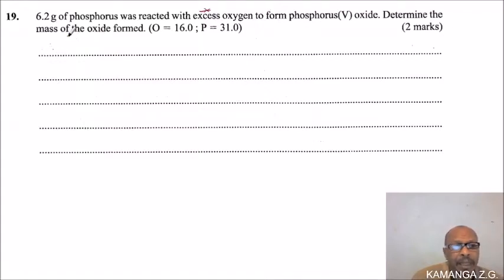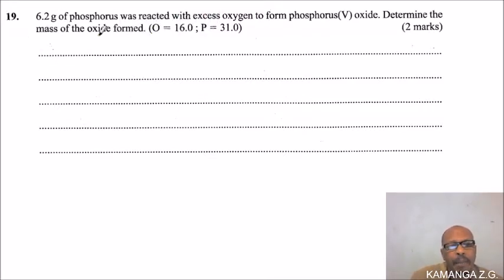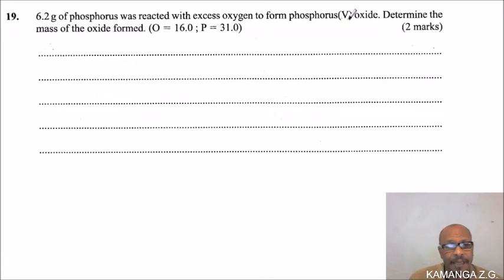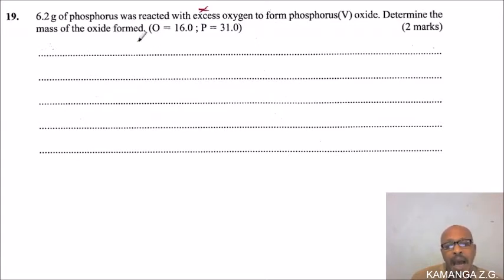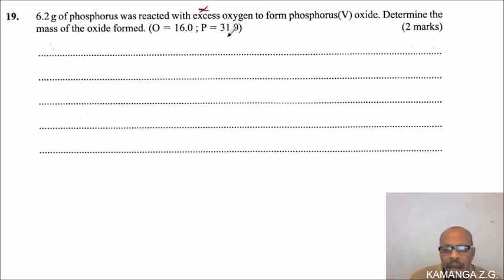This is question number 19. We are told 6.2 grams of phosphorus was reacted with excess oxygen to form phosphorus oxide. The word 'excess' here is very important. Determine the mass of the oxide formed. We are given the molar mass of oxygen as 16.0 and the molar mass of phosphorus as 31.0.